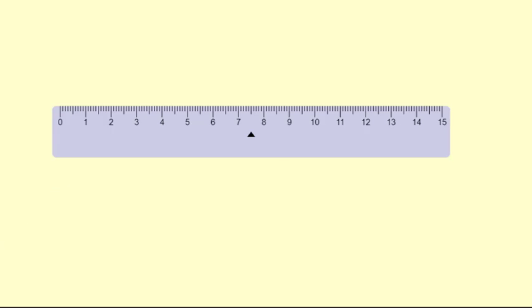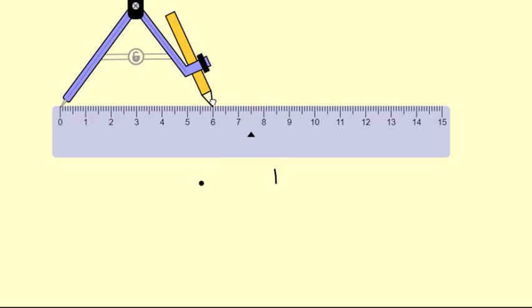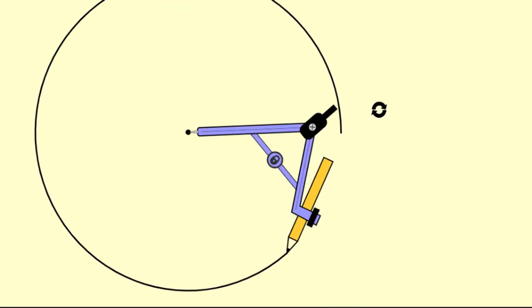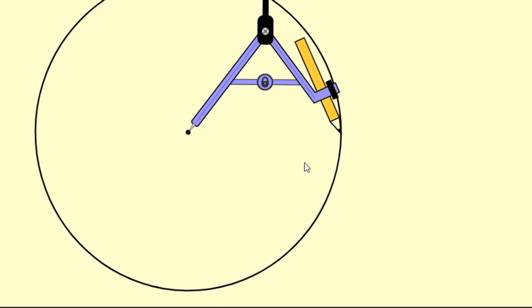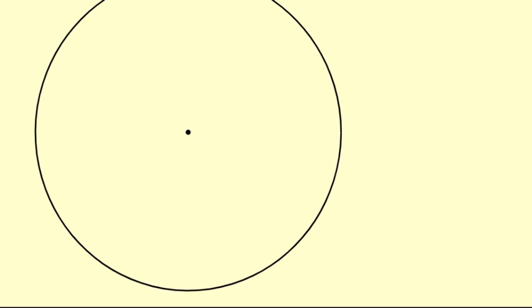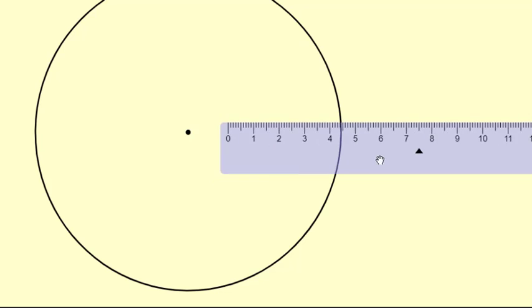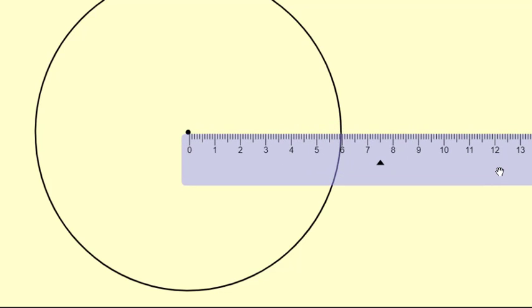First we draw a circle of radius 6 centimeters, which I've drawn already. Now we have to draw a line from the center. The question says from a point 10 centimeters away from its center we have to draw a pair of tangents. So taking the scale, I'll mark from the center a distance of 10 centimeters. So that's the line 10 centimeters long.